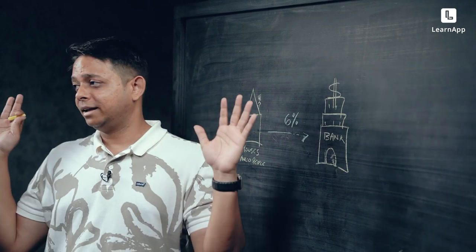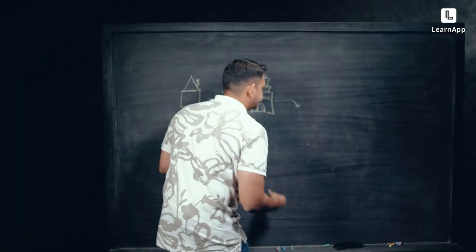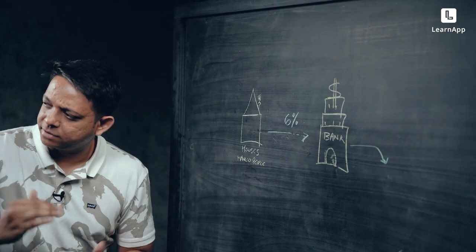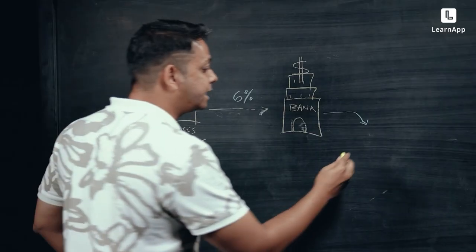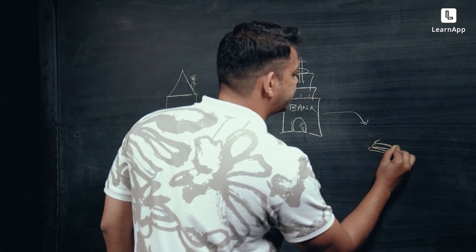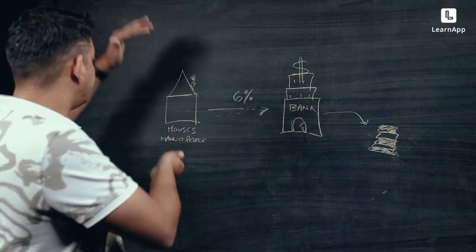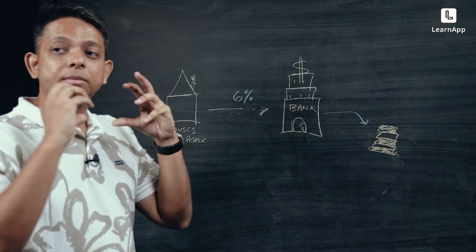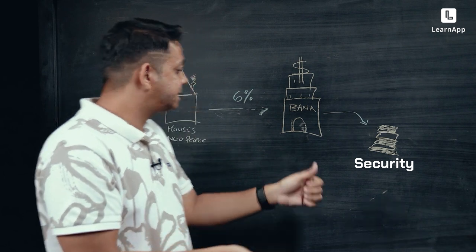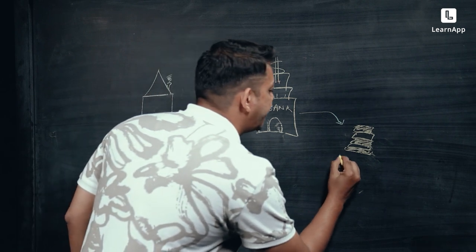And these houses are bought by mango people. So the common man actually buys these houses and how? By taking a loan from the bank. Now, here's the problem. At a 6% interest rate. So the bank earns 6% spread from these loans that are going out to these houses.